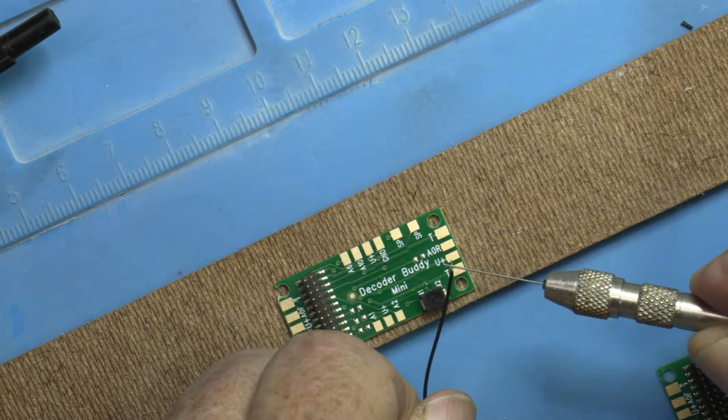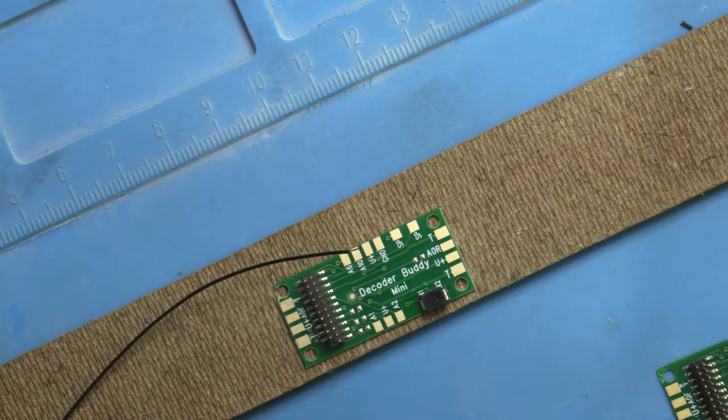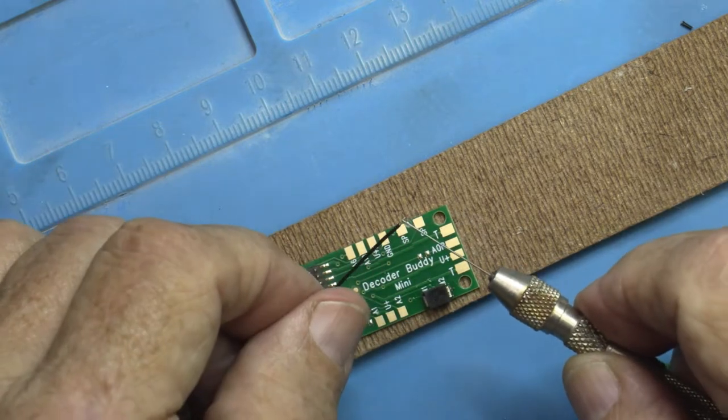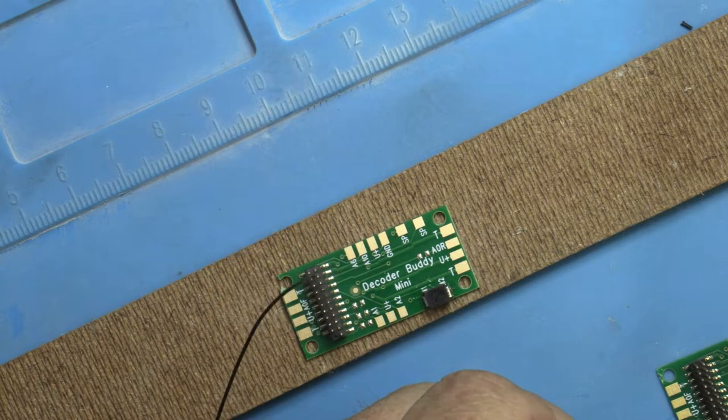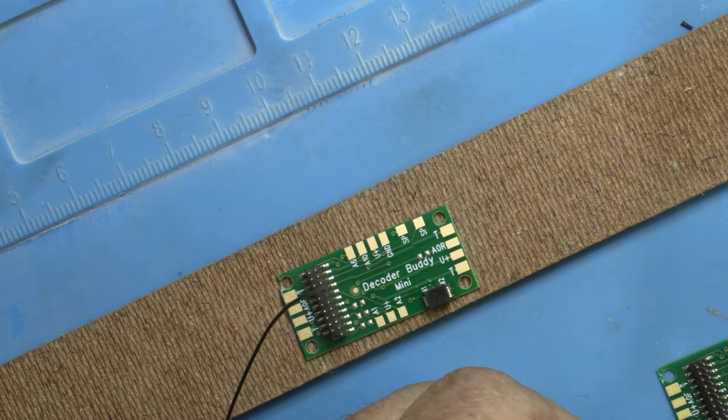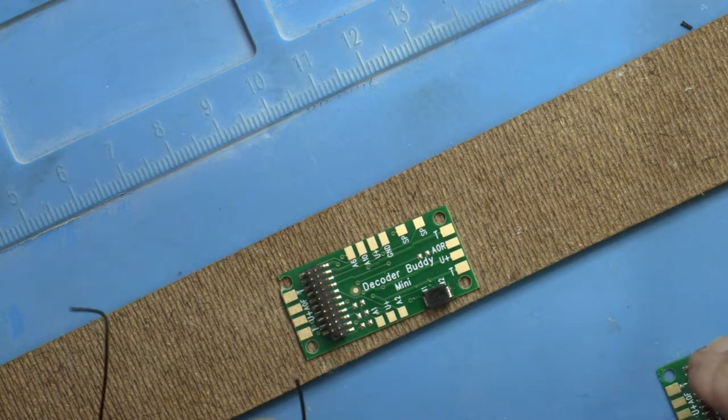Just a little bit more flux. I really like that pin vise with the 15 thousandths wire in it. It just gives me a lot of control of where that flux and how much flux is actually going onto a part.